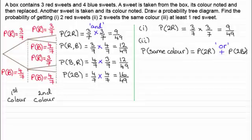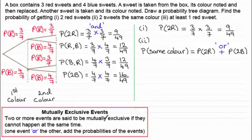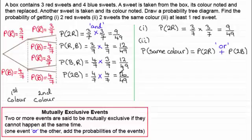We call these mutually exclusive events — two or more events are said to be mutually exclusive if they cannot happen at the same time. Getting two reds and getting two blues can't happen simultaneously; you either get the two reds or the two blues. So when one event or the other happens, we add the probabilities — this is the OR rule. Adding 9/49 for the probability of two reds and 16/49 for two blues gives a total of 25/49.